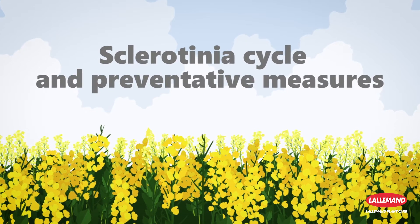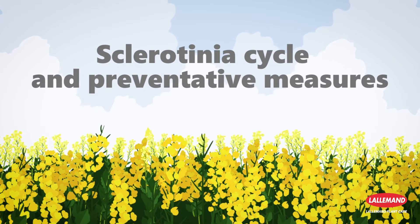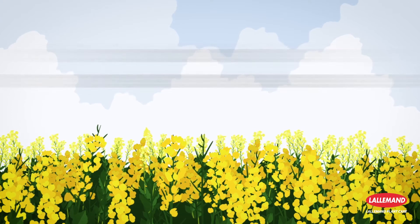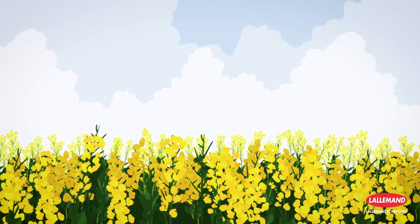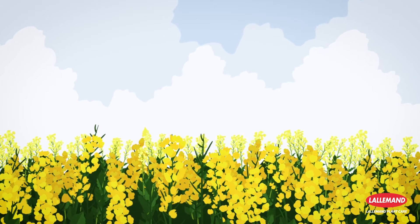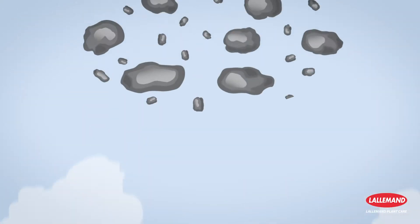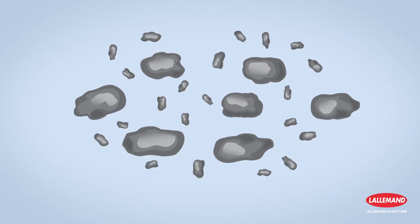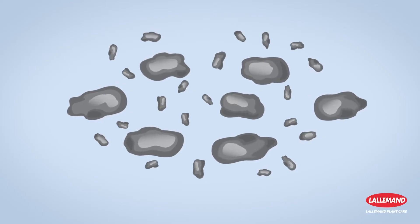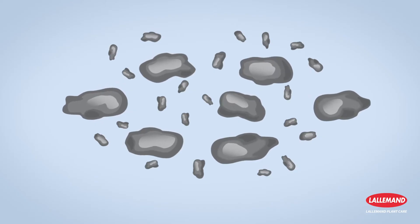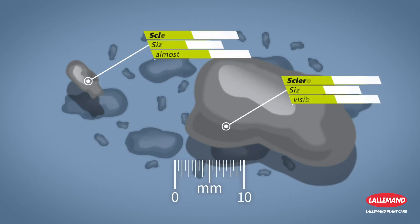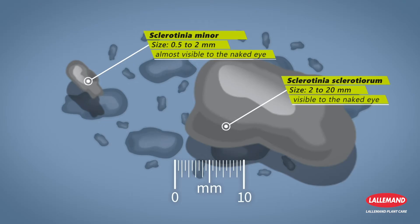Sclerotinia, also called white rot, is a serious crop disease caused by Sclerotinia sclerotiorum and Sclerotinia minor. These virulent species persist in the soil in the form of sclerotia for more than 10 years. This inoculum is replenished each time a crop is contaminated.